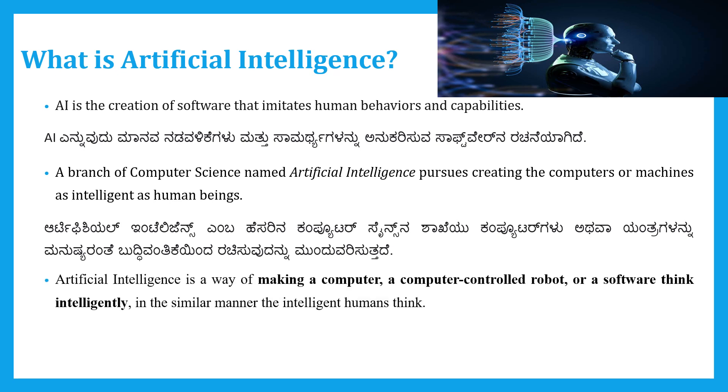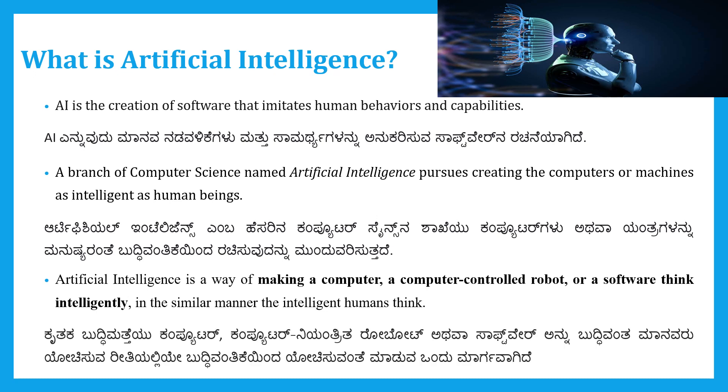One more definition: Artificial intelligence is a way of making a computer, a computer-controlled robot, or software think intelligently in a similar manner as intelligent humans think. This is the definition of artificial intelligence.